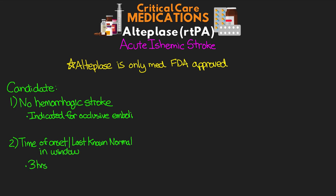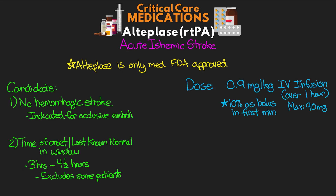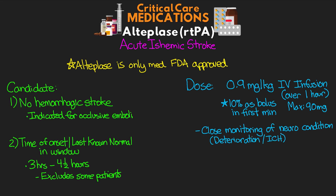The second condition is that the patient's time of symptom onset — or last known normal — is within the treatment window. Typically this window is within three hours, but expanded versions go out to four and a half hours, excluding some patient populations. The dose for stroke is 0.9 mg/kg IV infusion over one hour, with 10% of that dose given as a bolus within the first minute, with a max dose of 90 mg. During and for several hours after the infusion, close monitoring of neurologic condition is warranted, looking for deterioration or signs of intracranial bleeding. Tight blood pressure goals must be maintained — systolic less than 180, with an ideal goal around 140 to 150.